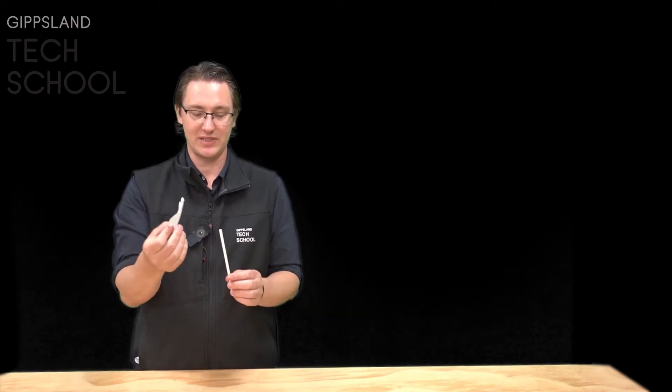For the paper rocket, we simply insert it back on the straw, and then we're going to use our breath to fly the rocket. Both of those work pretty well.